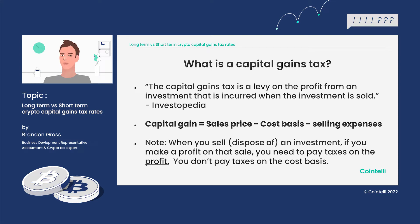This little equation here represents it pretty well. The capital gain equals the sales price minus the cost basis minus any selling expenses incurred. That's pretty much the formula.